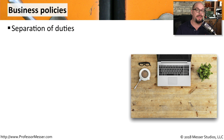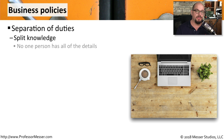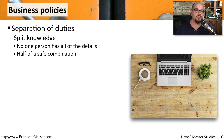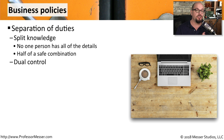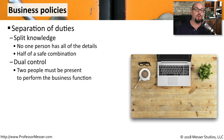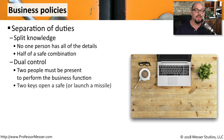Another set of business policies involves separation of duties. One type is split knowledge, where no single person has all of the details needed to perform a particular function. For example, one person may have half of a safe combination, and another person may know the other half. This is very similar to dual control, where both people must be present to perform that function. Instead of just telling someone your half of the combination, you have to show up with the key, and both keys must be used at the same time to open the safe.